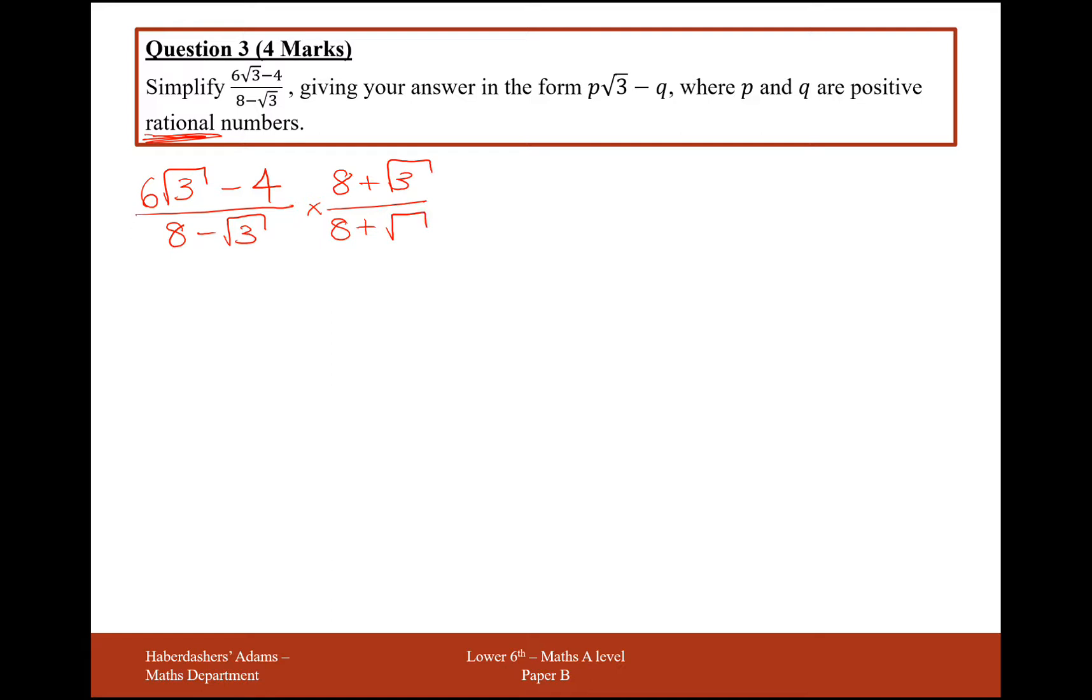So 8 plus root 3 times on the top, and 8 plus root 3 times on the bottom. So to times two fractions, we multiply the top together, like this, and we multiply the denominators together, like this.